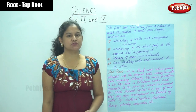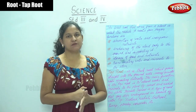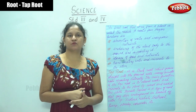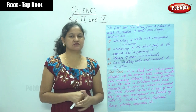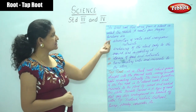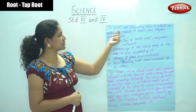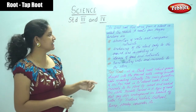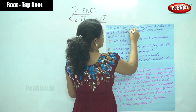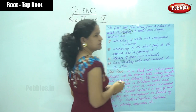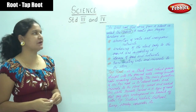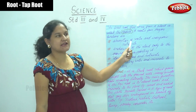We have seen that a root's main functions are absorbing water and minerals and providing structural stability for a plant. The first root that comes from a plant is called the radicle. So when a seed is buried into the ground, the first root that comes from the plant is called the radicle.